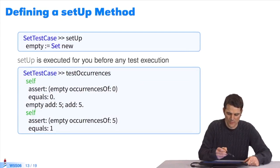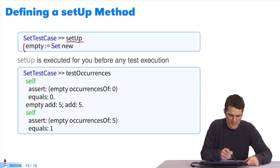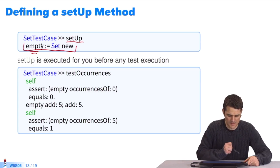What does it look like? In our example, if I take SetTestCase, I can define a setup method in which I write empty set new, so empty becomes an instance variable of SetTestCase, and then in my test method, I can directly use the instance variable empty, which was correctly initialized because before execution of test occurrence, the method setup was executed.